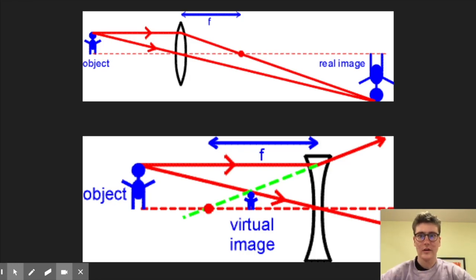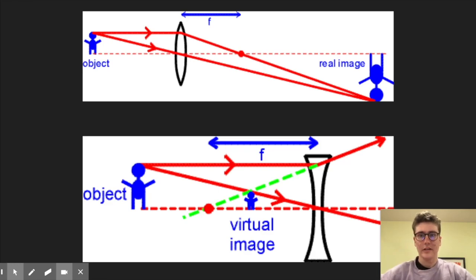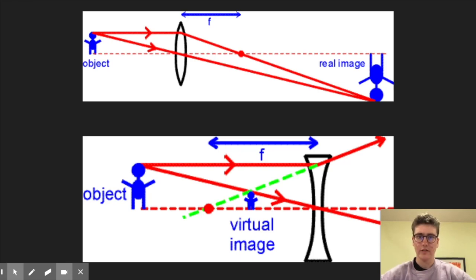Convex lenses bulge out in the middle. This causes the light to redirect inwards, flipping the image and causing a real image. Concave lenses look like an hourglass from the side, with the top and bottom being wider than the middle. They redirect the light outwards, causing the image to be right side up. This image is called a virtual image.